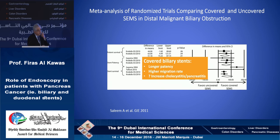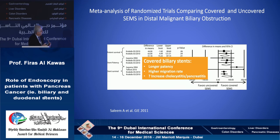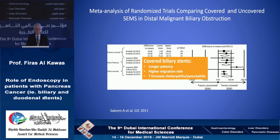The price you pay with covered stents is usually higher migration rates — around 10% of these stents will migrate out because they are fully covered with nothing to anchor them. There is also some data suggesting that covered stents are associated with a higher risk of pancreatitis and cholecystitis. So in most patients with a patent cystic duct, we prefer an uncovered stent.